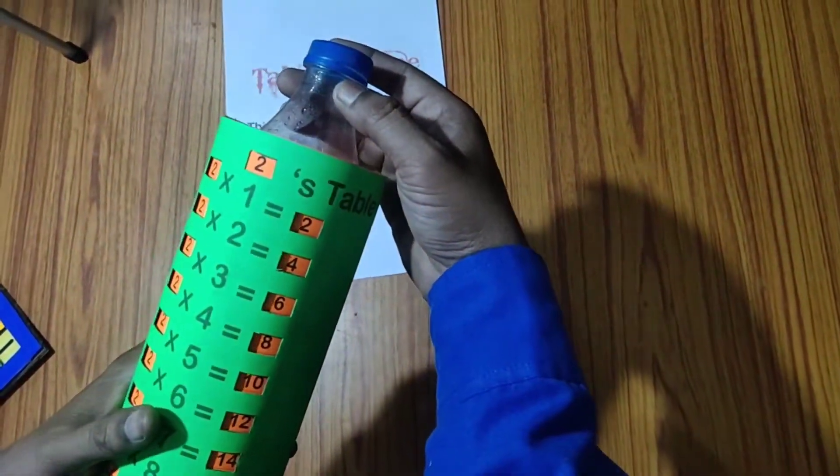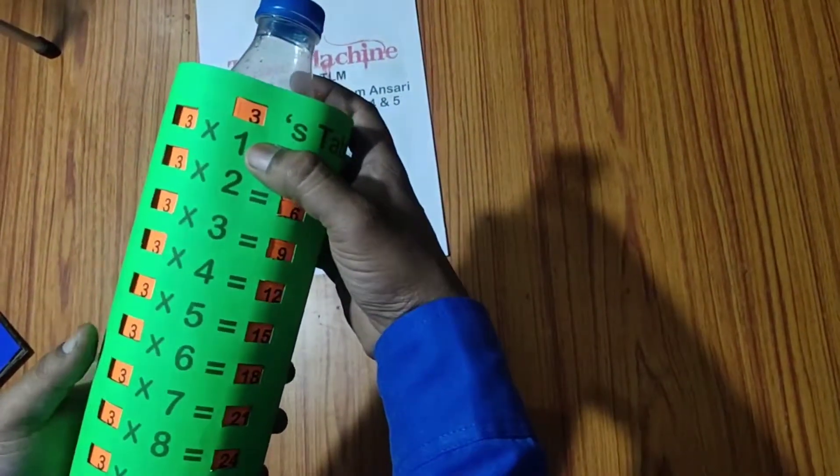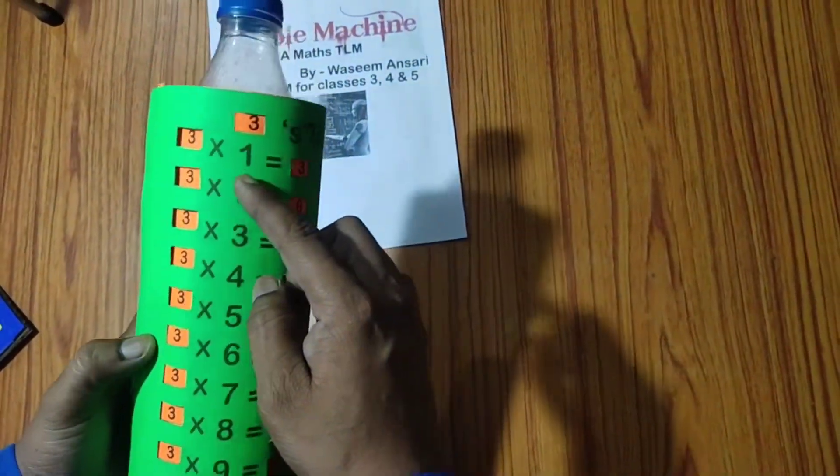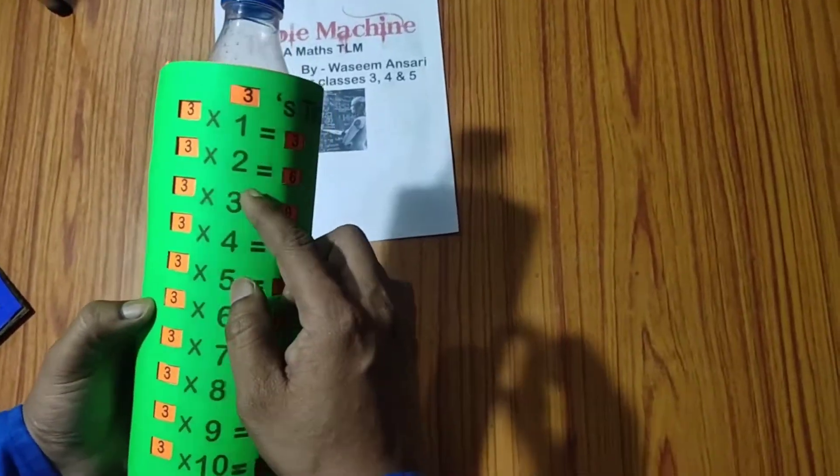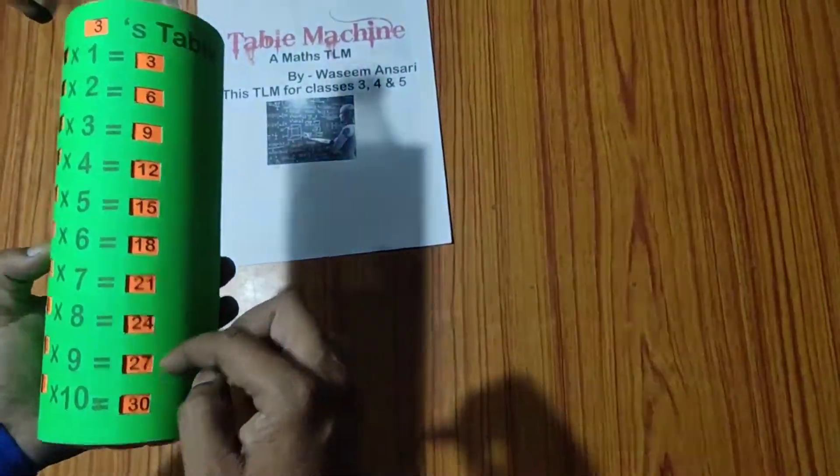Similarly we will rotate it a little bit. We will get the table of 3 here. You can see easily table of 3. 3, 1 jar, 3. 3, 2 jar, 6. 3, 3 jar, 9. Similarly till 30.